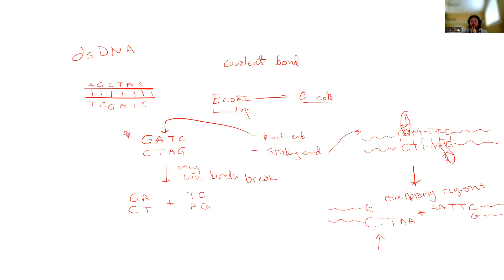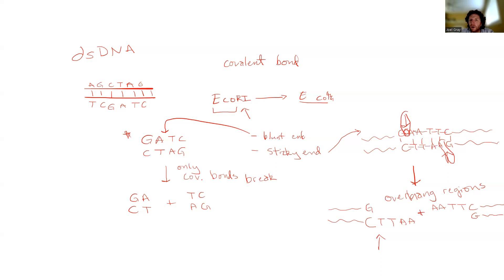Restriction endonucleases will cut and generate either blunt ends or sticky ends. In both cases, covalent bonds are broken directly by the restriction endonuclease. But the positioning of those covalent bonds matters. If those covalent bonds are directly across from one another, only the covalent bonds are broken. If those covalent bonds are staggered from one another, the outcome leads to breakage of hydrogen bonds as well. So staggered covalent bonds lead to fallout that causes hydrogen bonds to also be broken.